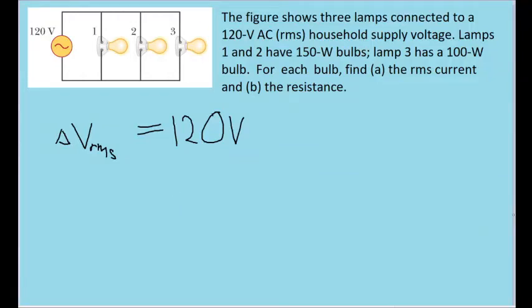The first thing to note here is that every single one of the lamps are connected in parallel with the voltage source, the AC power supply here. So every single lamp is going to have a potential difference, or an RMS voltage, of 120 volts.